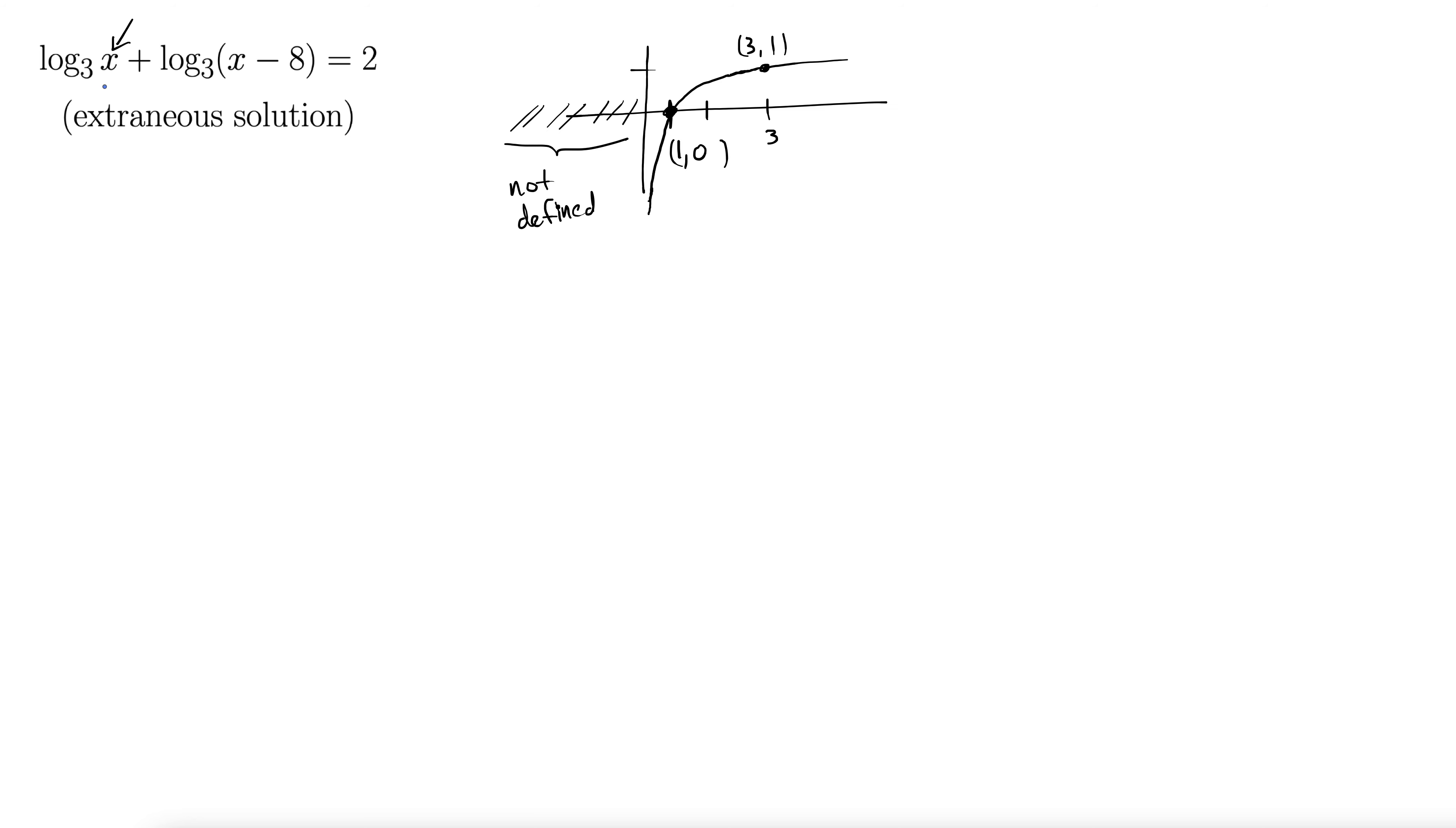Let's go ahead and move forward with solving this. We have log base 3 of x plus, so we're going to use the property of logarithms here to combine these into a single logarithm. So we have log base 3 of x times x minus 8 equals 2. That's the first thing we do. So our plus outside became multiply inside. That's the property of logarithms.